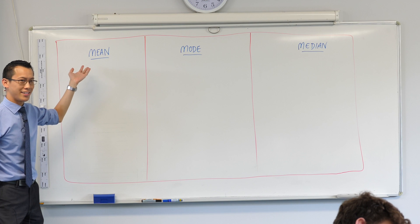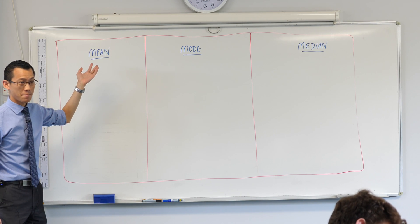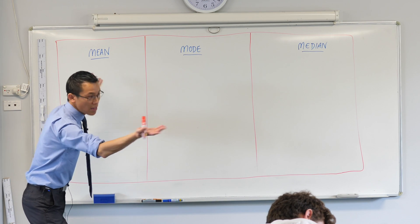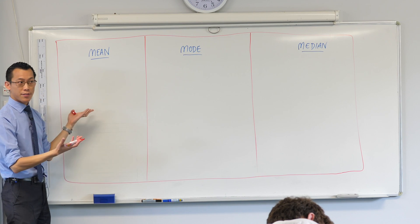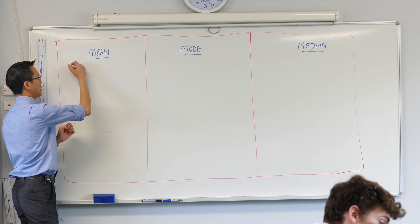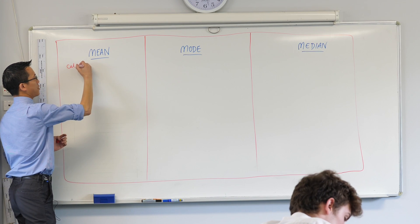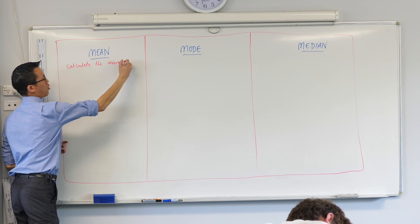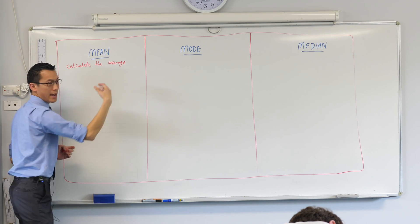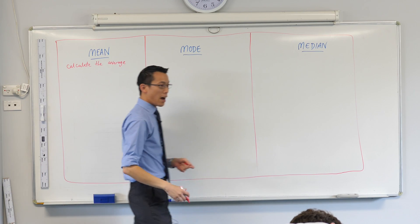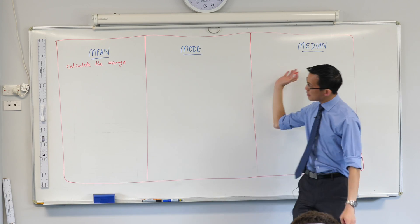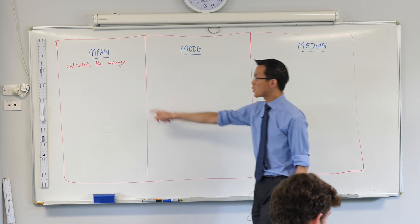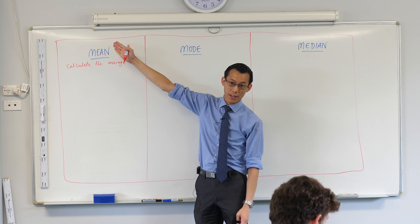What do you do to calculate the mean? Can someone tell me? You're going to add all the numbers and then divide. So another way of saying mean is just: calculate the average. Average in everyday speaking kind of means the middle, kind of means all of these, but more specifically in mathematics when we say average, we mean add everything up.